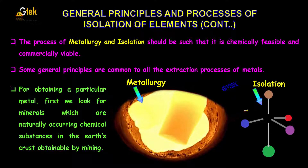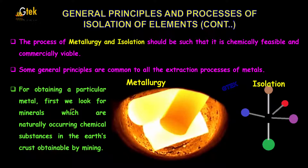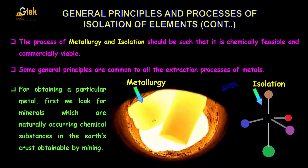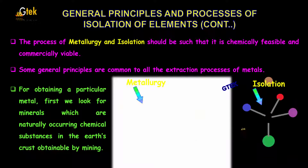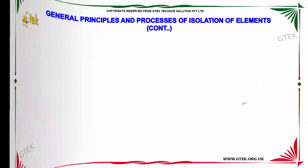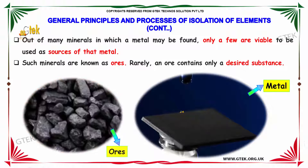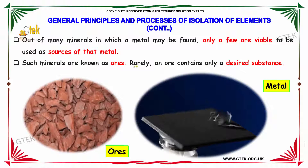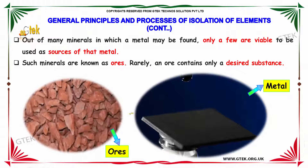The process of metallurgy and isolation should be such that it is chemically feasible and commercially viable. Some general principles are common to all the extraction processes of metals. For obtaining a particular metal, we first look for minerals, which are naturally occurring chemical substances in the earth, obtained by mining. Out of many minerals in which a metal may be found, only a few are viable to be used as sources of that metal.